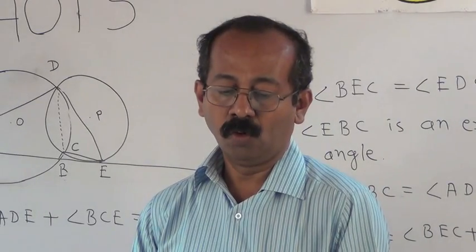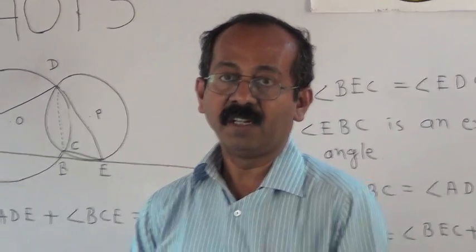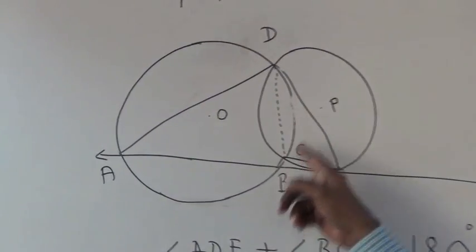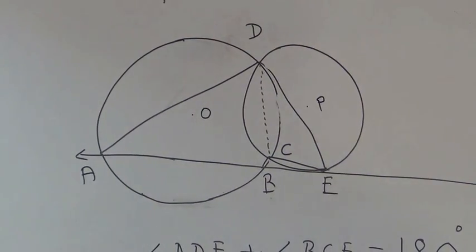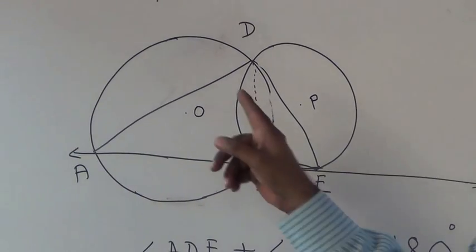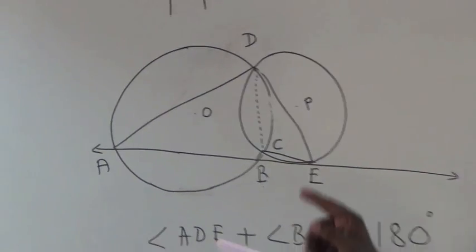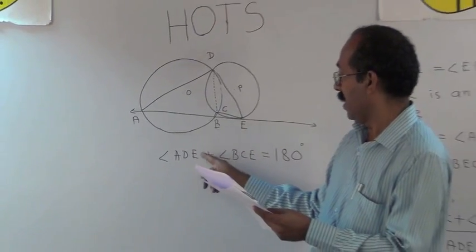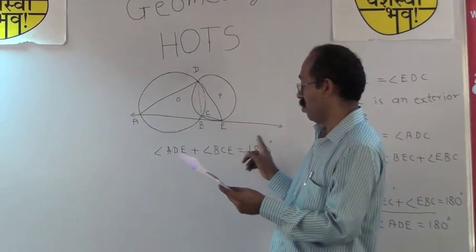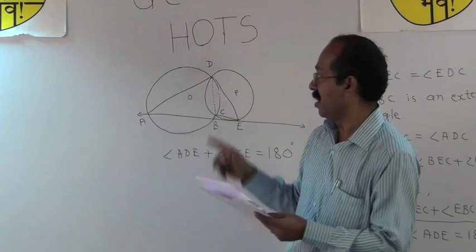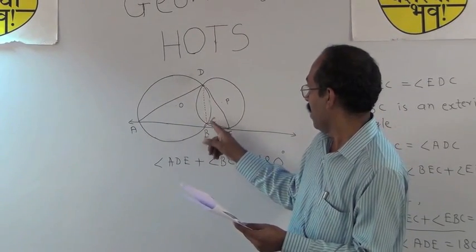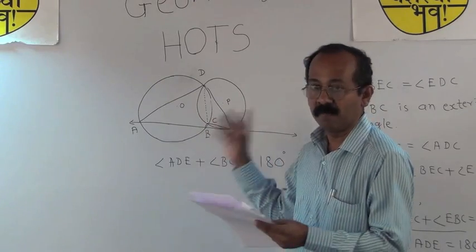Let us go for example 2. Two circles with centers O and P intersect each other in points C and D. Chord AB of circle with center O touches the circle with center P in point E. Prove that angle ADE + angle BCE = 180°. For solving this particular problem, we have to do the construction, that is draw segment CD and segment CB.